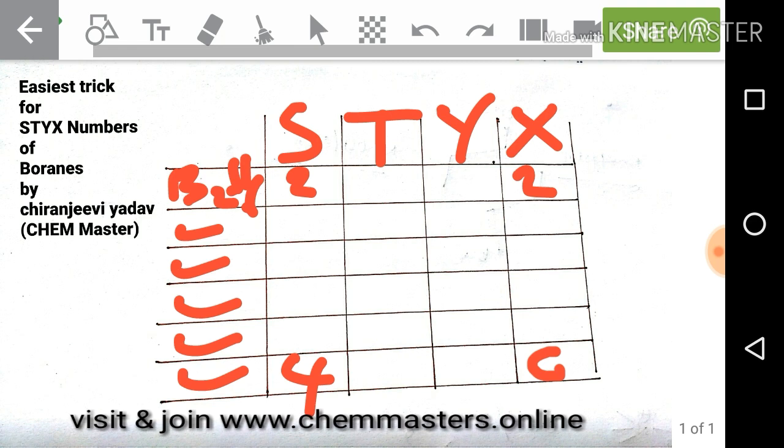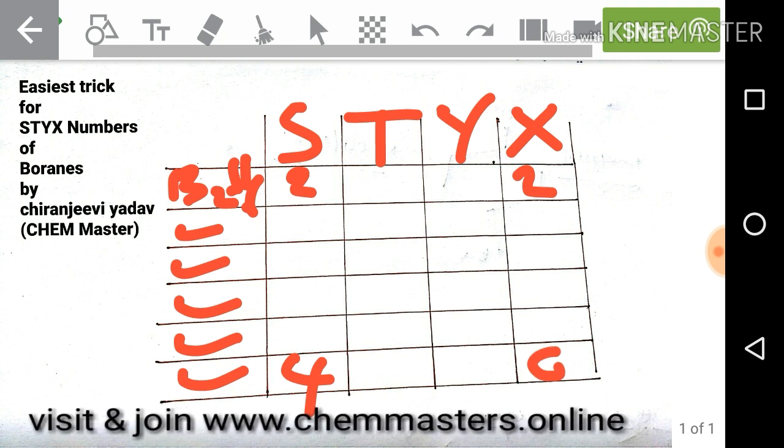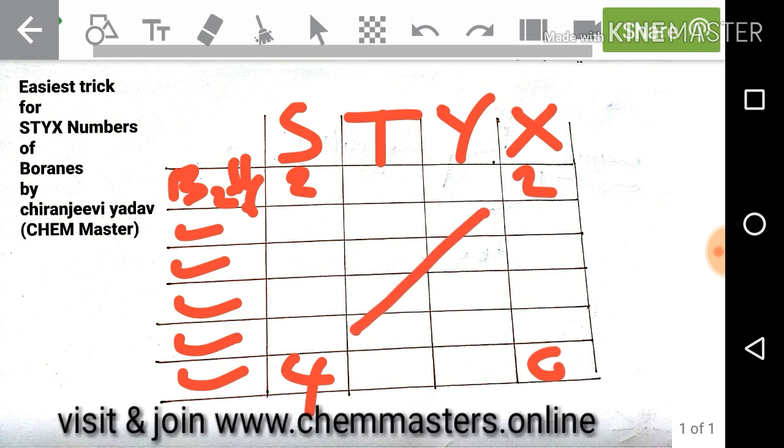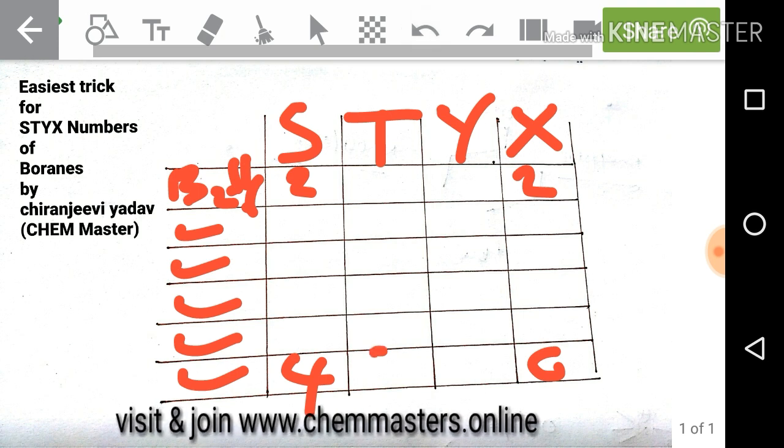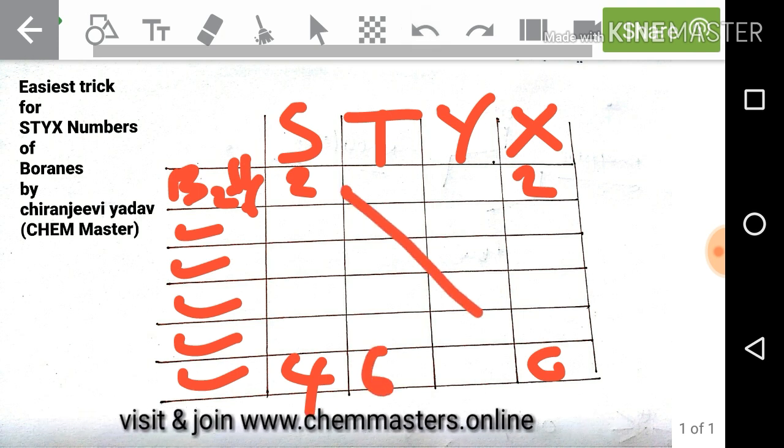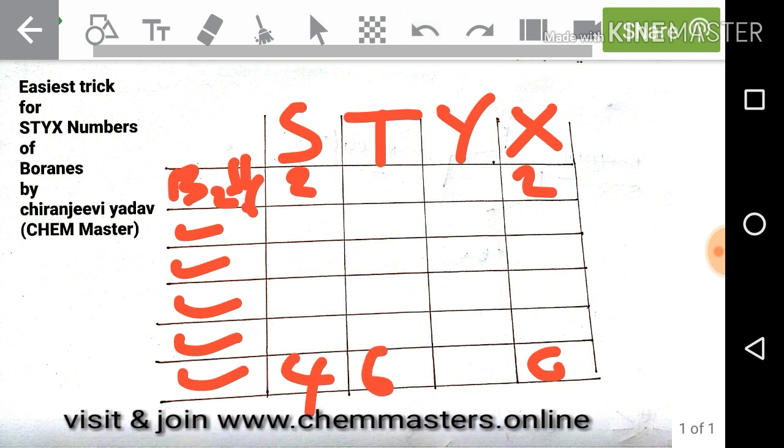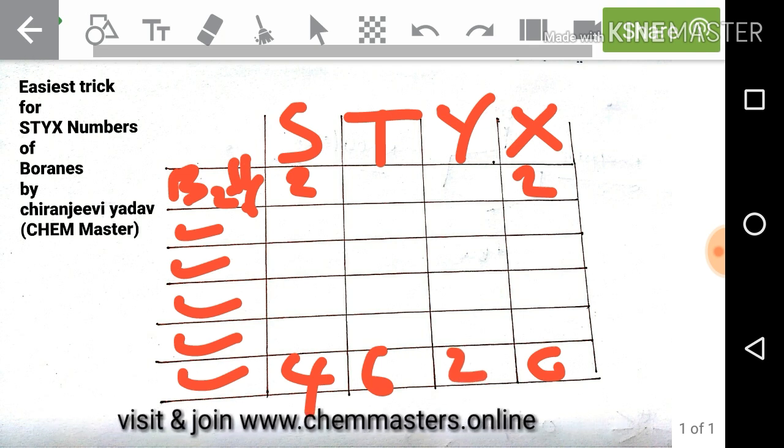Now just take the sum: 4 plus 2 is 6, just write down 6 here. I am 2 plus 0, so it is 2, so just write down 2 here.